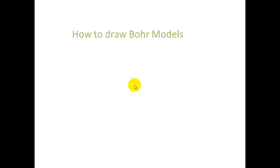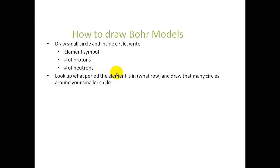So this is how you draw Bohr models. Here's a step-by-step kind of description. The first thing you're going to do is draw a small circle that's going to represent the nucleus. And inside the circle, you're going to write the element symbol that you are drawing the Bohr model for, and then give me the number of protons and neutrons that are inside the nucleus. Next thing you're going to do is look up what period, which is the row, that the element is in. And then whatever that period number is, you're going to draw that many circles around your smaller circle. That's going to represent your orbitals.